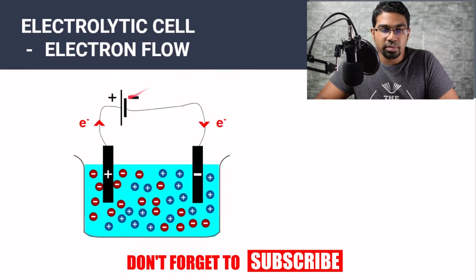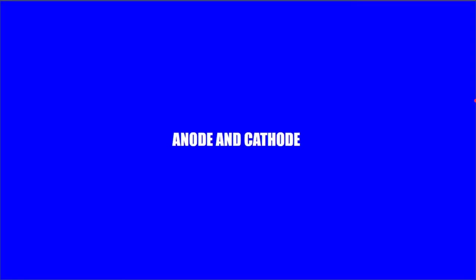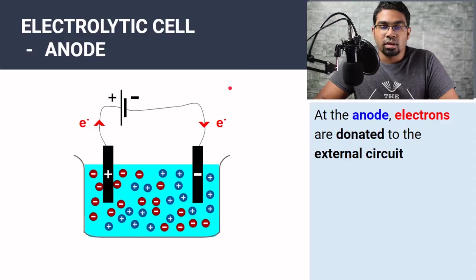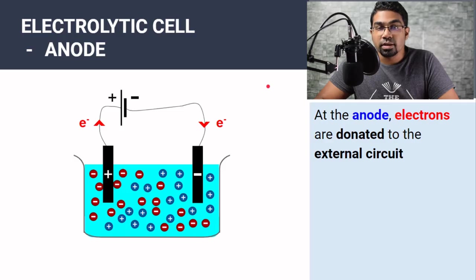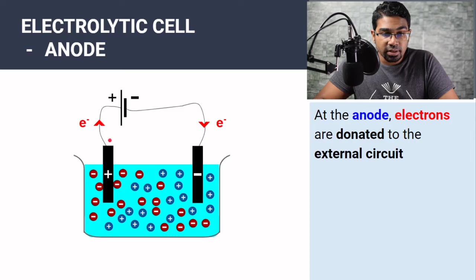However, electrons flow from the negative terminal to the positive terminal, so it's the opposite direction of current flow. Anode is defined as the site where electrons are donated to the external circuit. So whenever we define anode and cathode, we must always remember the definition is with reference to the external circuit, and the external circuit here is the connecting wires and the dry cell.